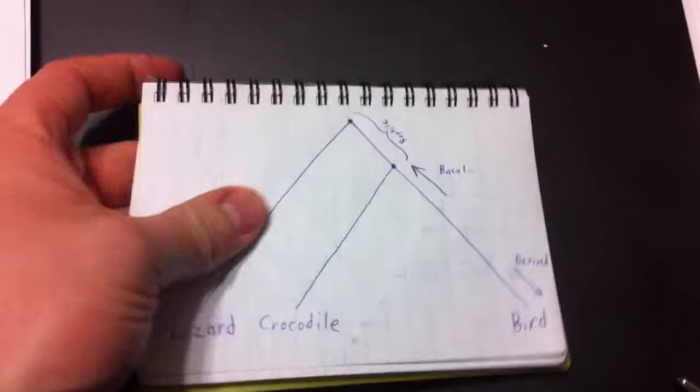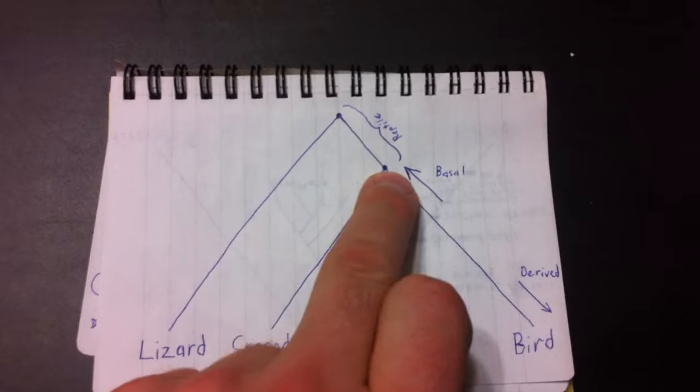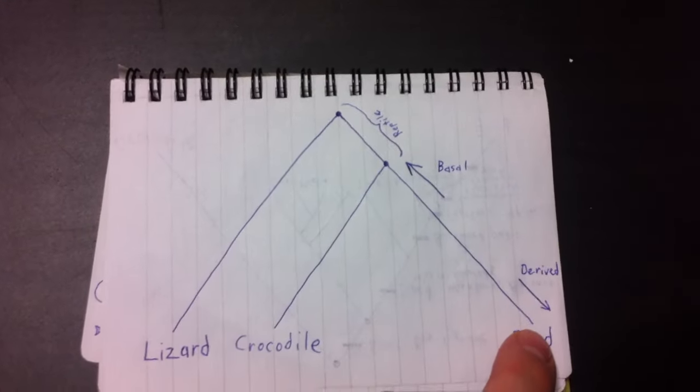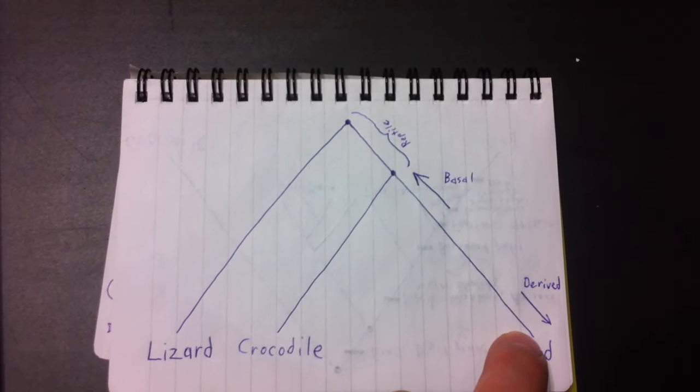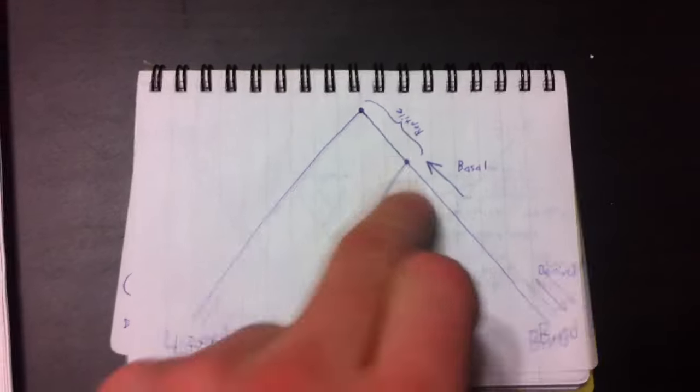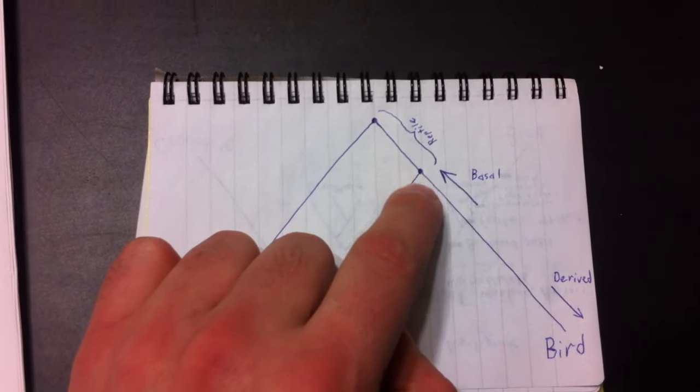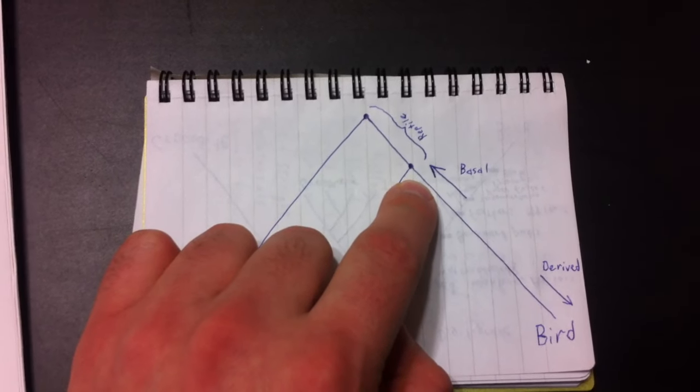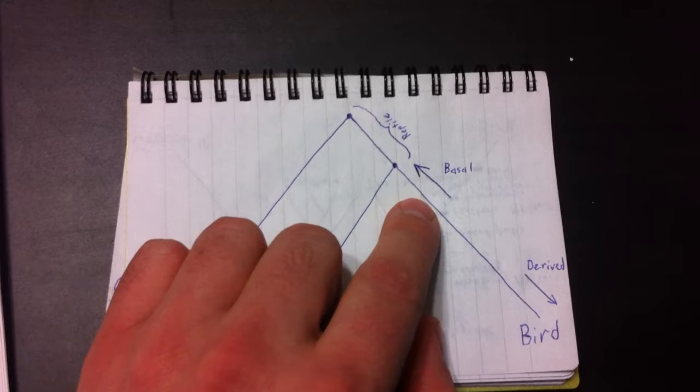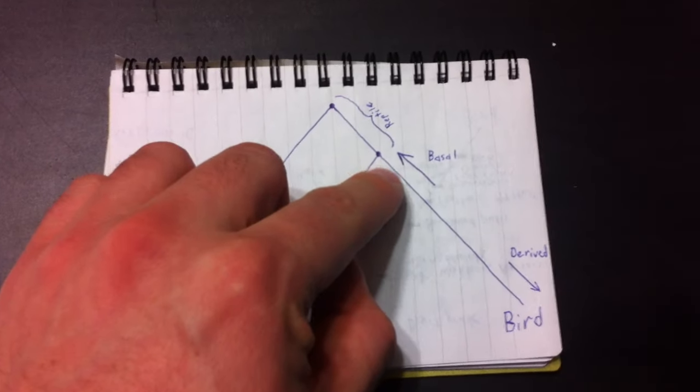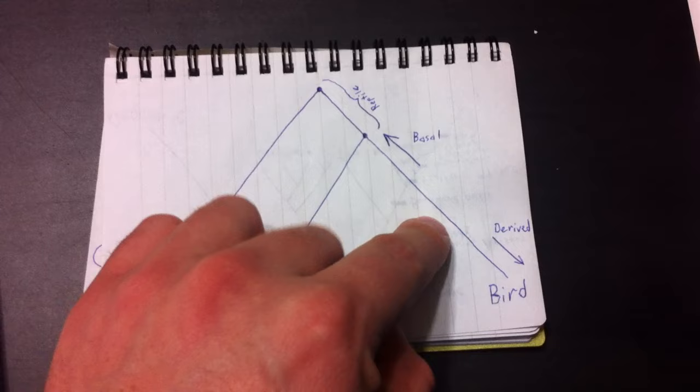But if Darwin's theory is correct, then that means that what we would expect to find in the fossil record is, here we would find something that we would have no difficulty classifying as a reptile. And here we find things that we have no trouble classifying as a bird. However, as we continue to find fossils, random sampling along this branch, what we're going to find is we should find a group of reptiles that has maybe just a couple of features in common with birds. And then we'll find a subset of them that have a few more features in common with birds, and a subset of them with a few more features in common with birds. So we have to extend the definition of reptile further and further down this branch.